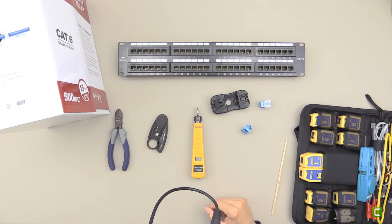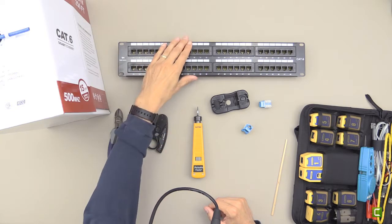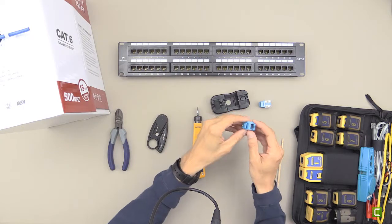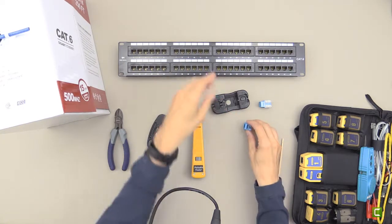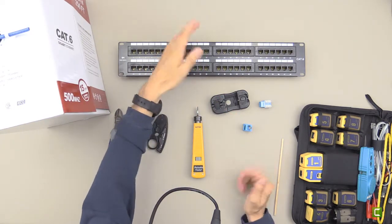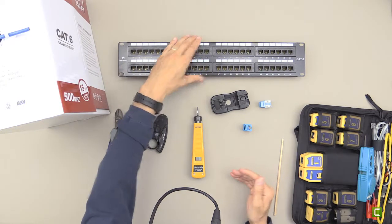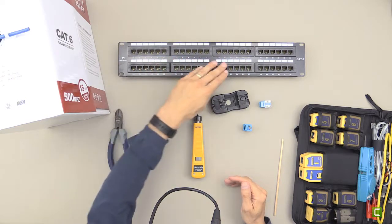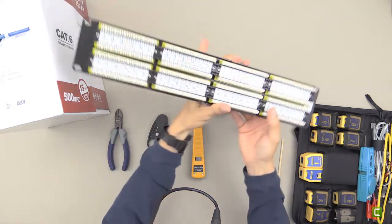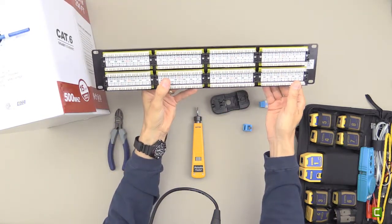In this sub-lesson, we're going to wire up a patch panel to an RJ45 jack. This patch panel is the type you might see in a server room, wiring closet, or data center.